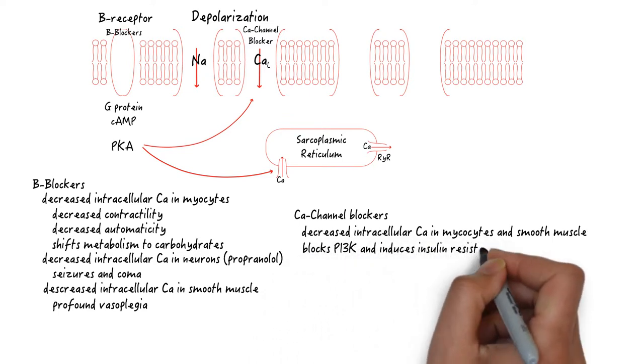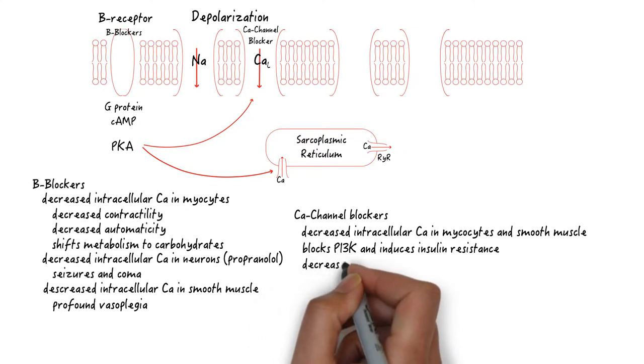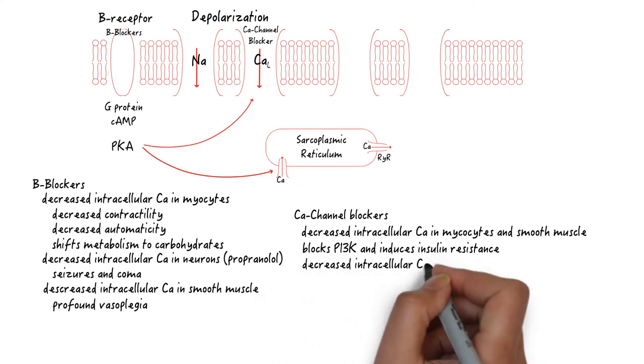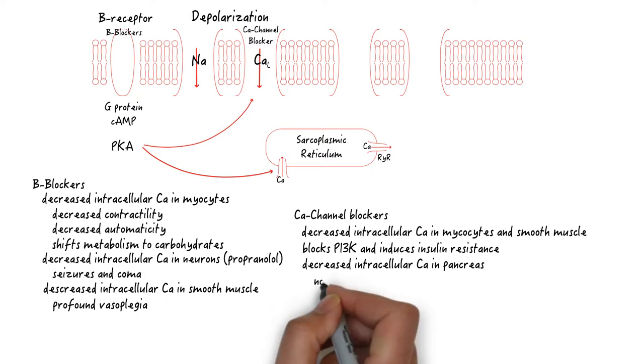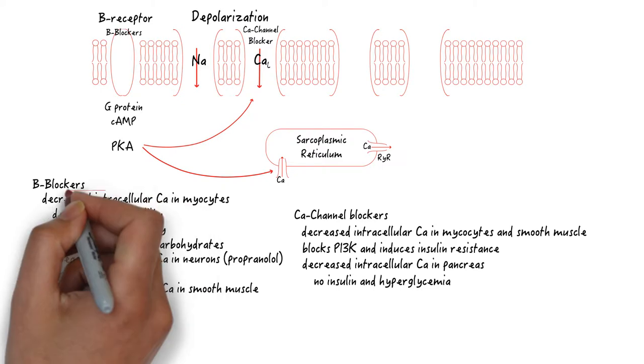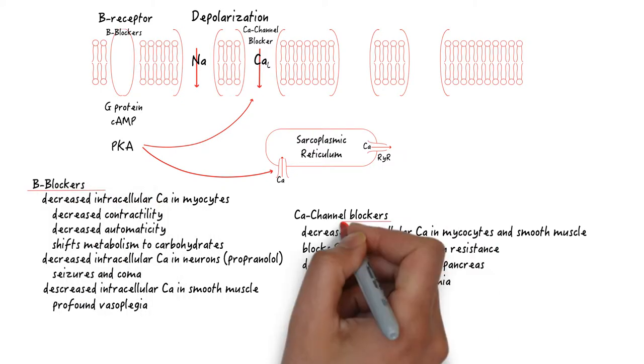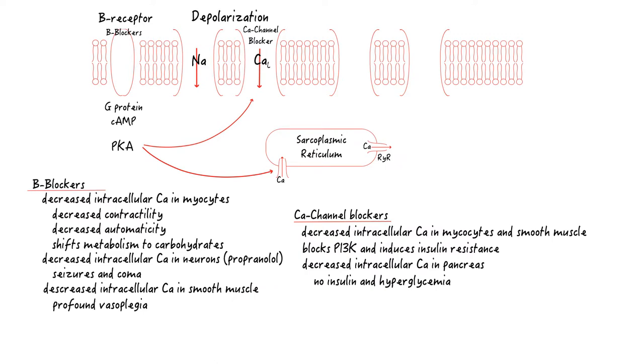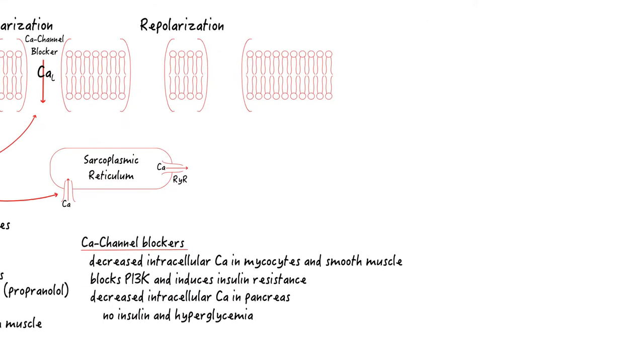Calcium channel blockers also block the PI3K pathway and can induce insulin resistance. Lastly, L-type calcium channels are also found on the pancreas and necessary for the release of insulin. So calcium channel blockers cause a clinical picture that is very similar to beta blockers. They both decrease intracellular calcium. But unlike beta blockers, calcium channel blockers can also induce hyperglycemia from decreased insulin secretions and increased insulin resistance. This combined with a shifting of myocardial fuel supply to carbohydrates from free fatty acids and lactate worsens the metabolic supply to myocytes.